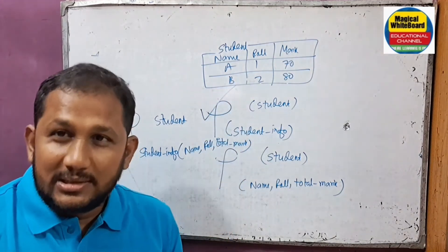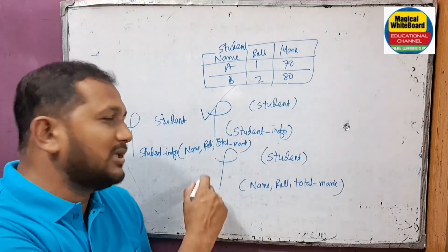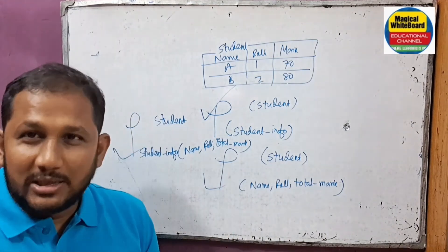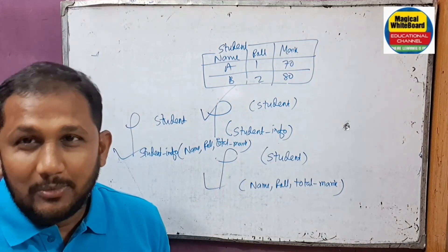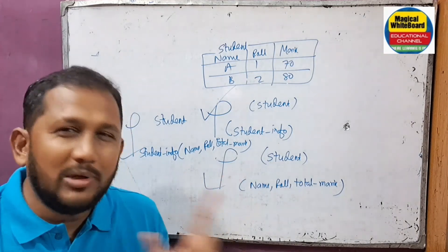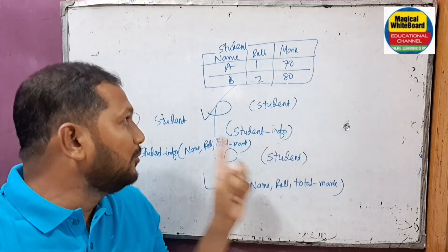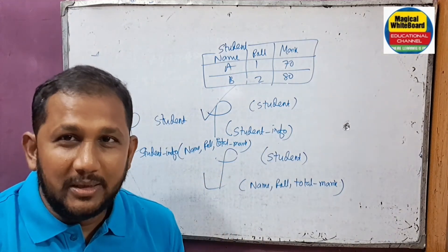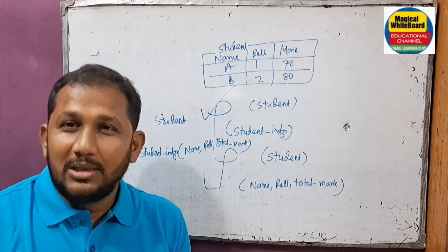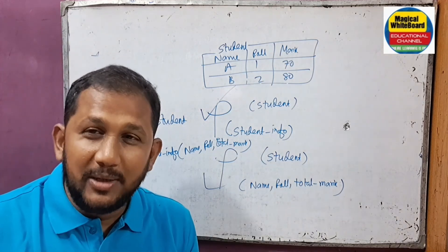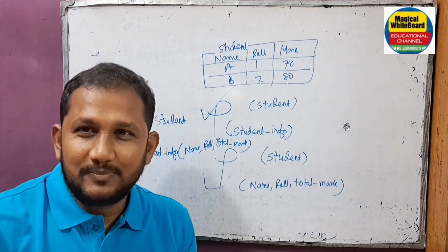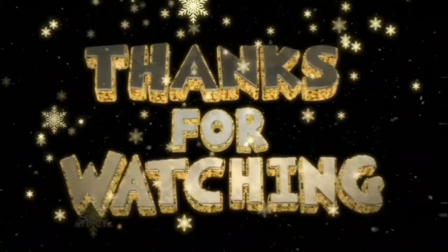The Rename Operator is a unary operator — it can operate on one relation at a time. It's a very easy concept. The Rename Operator is used to rename relations and attributes in relational algebra. Thank you very much for watching this video. Please share and subscribe.